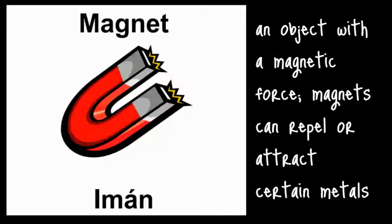Our first vocabulary word is magnet. A magnet is an object with a magnetic force. Magnets can repel or attract certain metals.